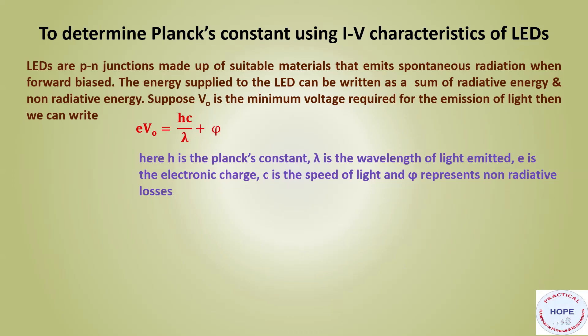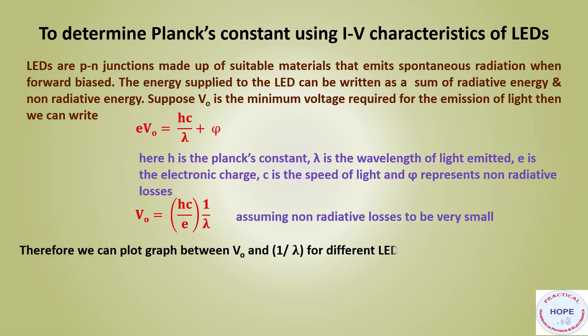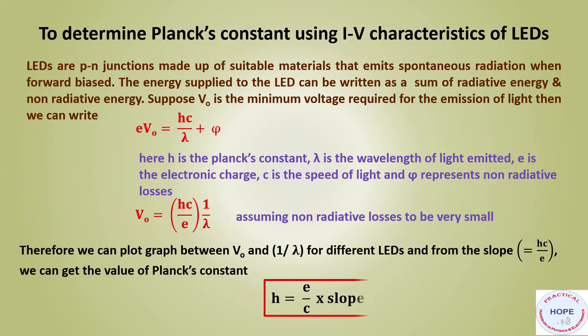Now, we will assume that these non-radiative losses are negligible or very small. Then this expression can be rearranged like this: V0 equals hC/e into 1/lambda. Therefore, we can plot a graph between V0 and 1/lambda for different LEDs, and from the slope we can get the value of Planck's constant using this expression: h equals e/C into slope.